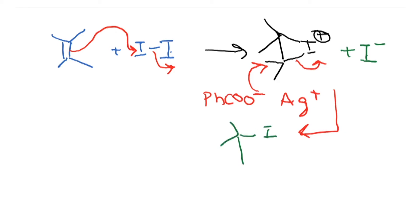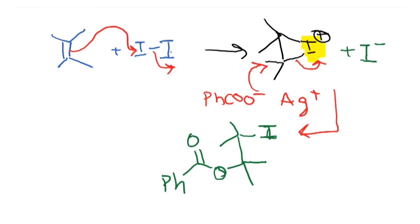The product formed has iodine on one carbon and an O–C(=O)–Ph ester on the adjacent carbon, with two methyl groups. The iodine was the I⁺ in the cyclic iodonium ion and now becomes neutral iodine. A new bond is formed between carbon and oxygen, and the relative orientation is anti — the oxygen is on the opposite side from the iodine.